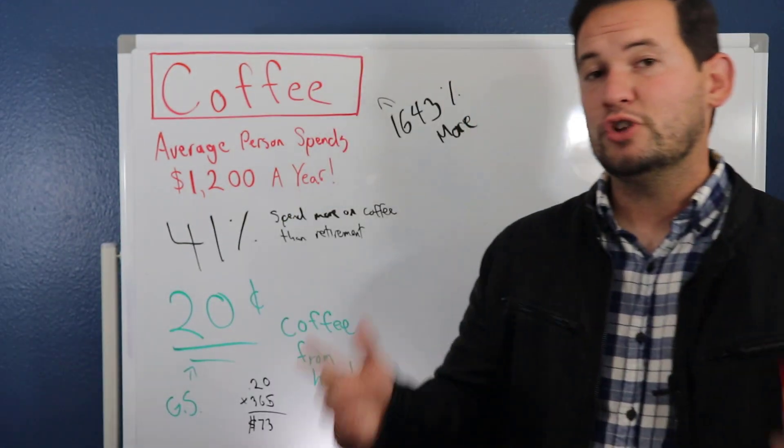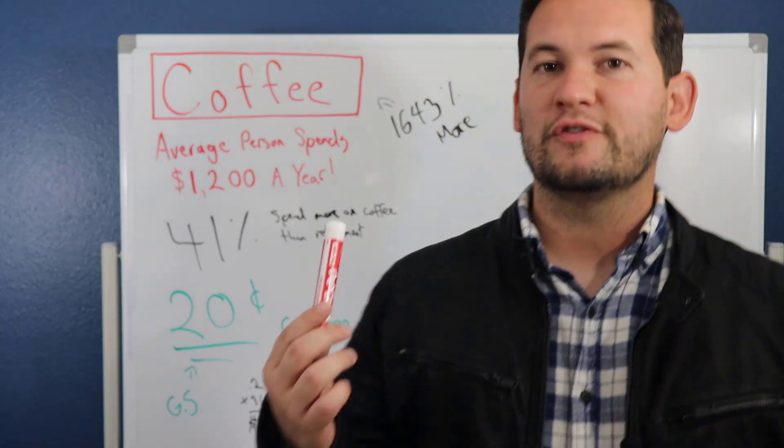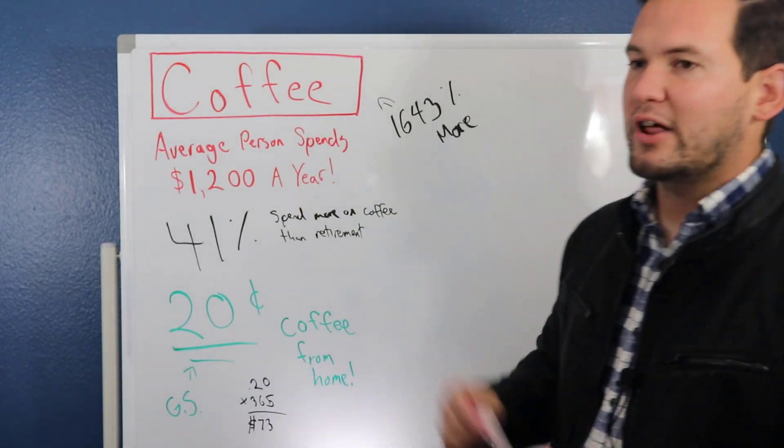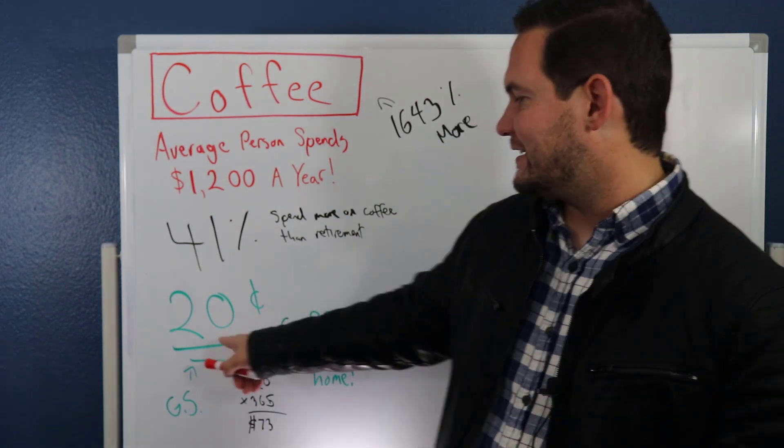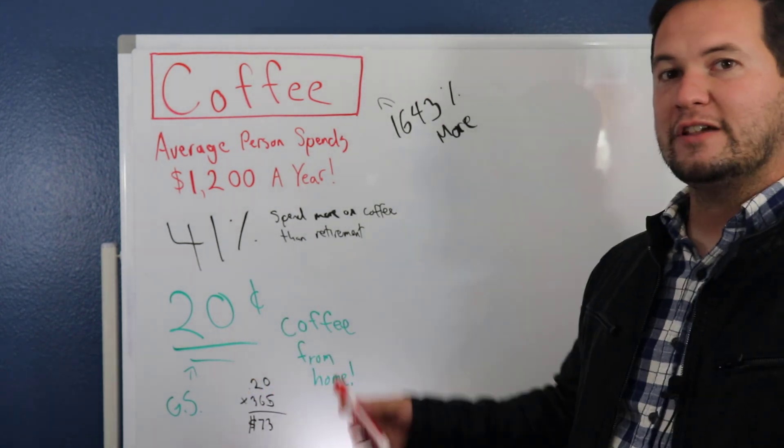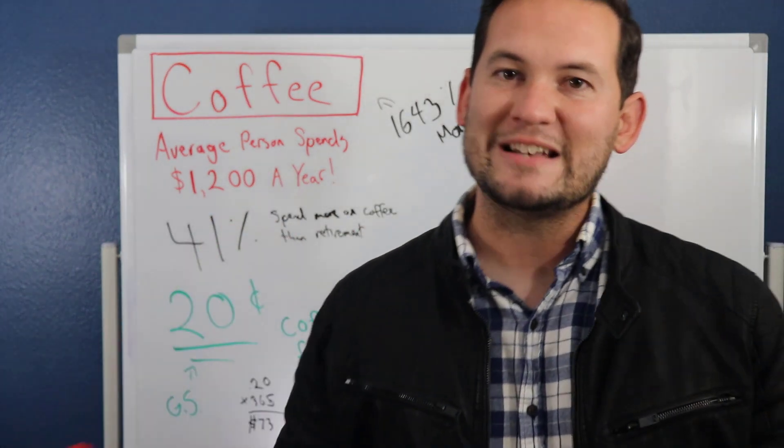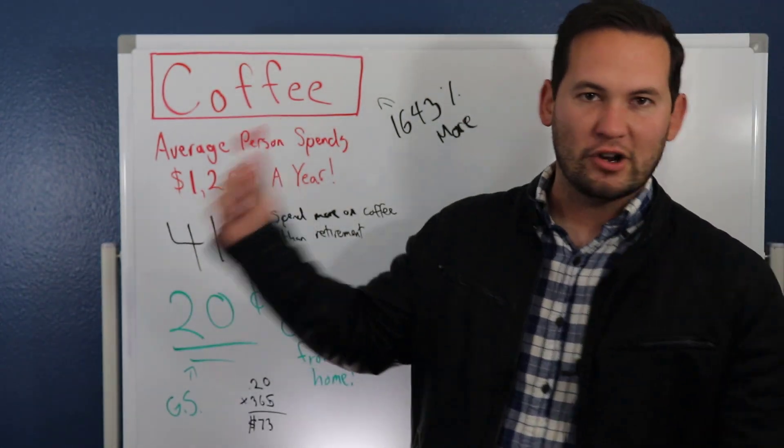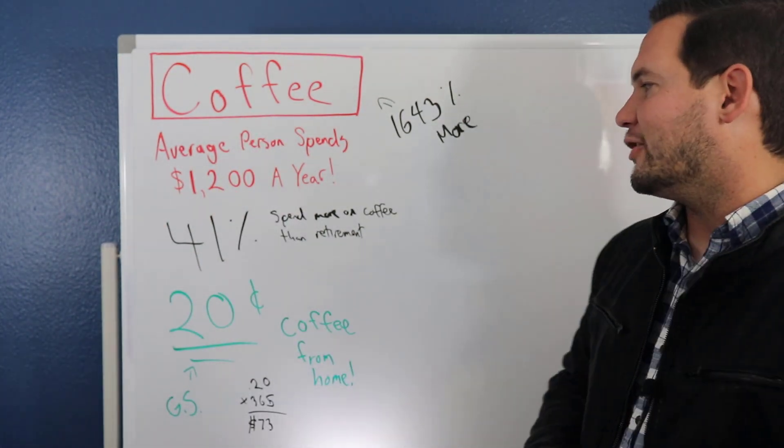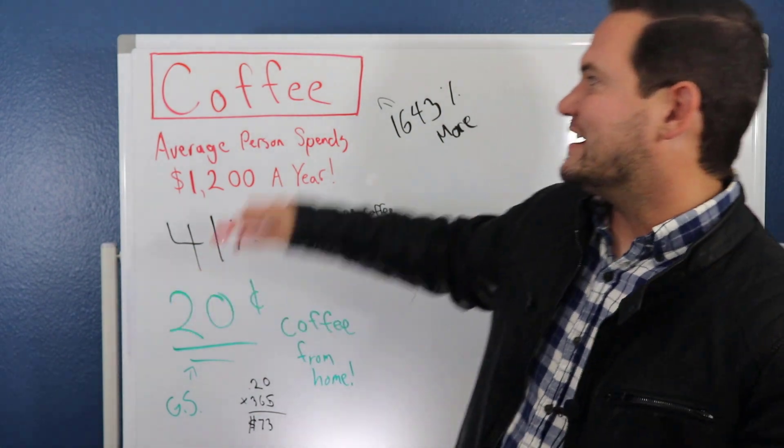If you don't know who Graham Stephan is, he's one of the largest financial channels on YouTube. I'll have a link to his video where he talks about how he makes 20 cent coffee from home. He makes coffee from his house - it takes 20 cents, that's how much it costs per day to make his coffee. Again, I'll have a link below if you want to check out that video. That's what you should be doing, not spending $8, $9, $10 per day at Starbucks - that's absolutely insane.